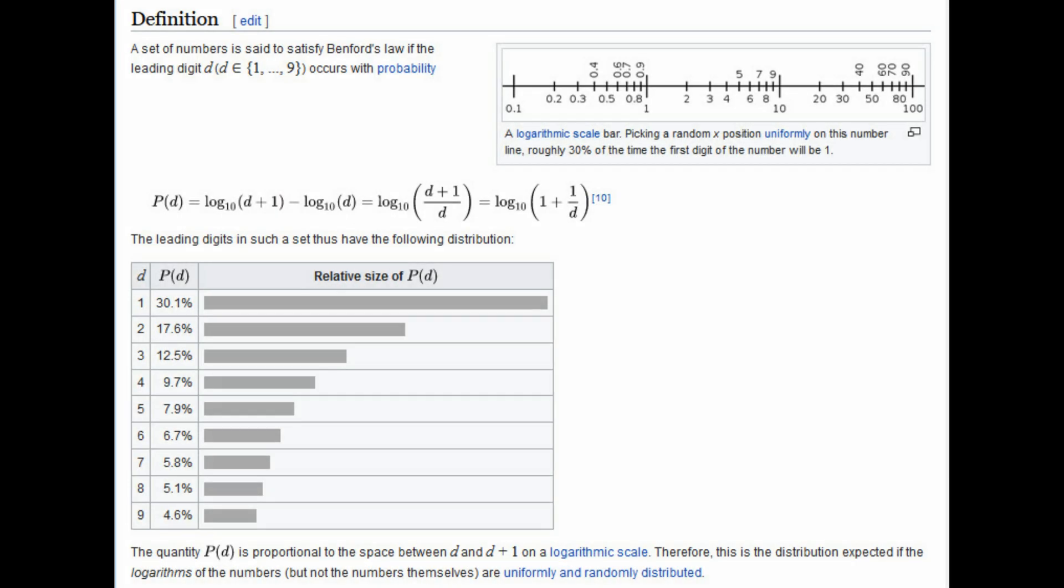According to this law, if you have a population of randomly generated numbers, you will see that number one will occur more frequently or 30 percent of the time, number two will appear 18 percent of the time, number three will account for 13 percent of all numbers, all the way down to number nine which will appear around five percent of the time.